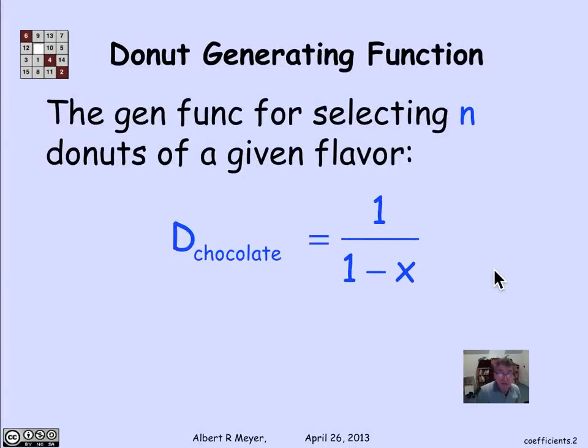Let's start off with chocolate and vanilla, but look at chocolate in isolation first. The generating function for the number of ways to pick n chocolate donuts is only one way, so it's the geometric series 1 over 1 minus x.